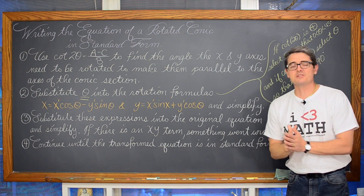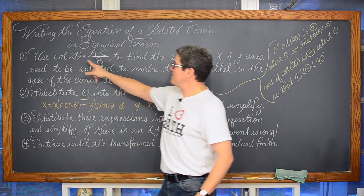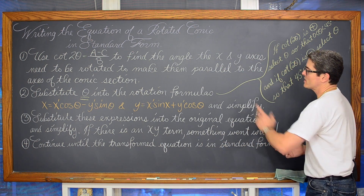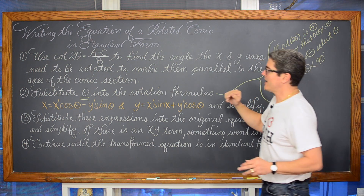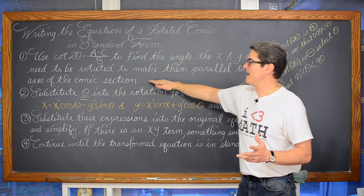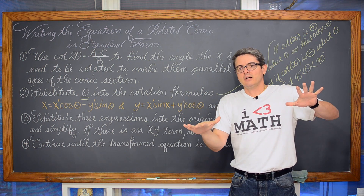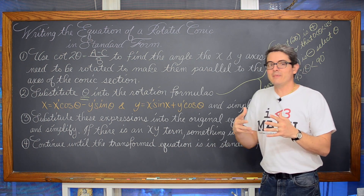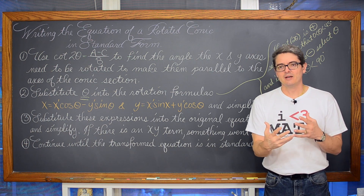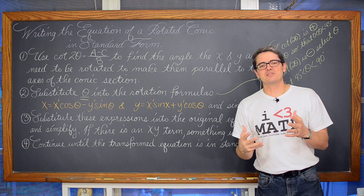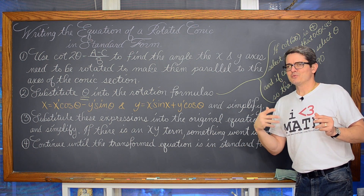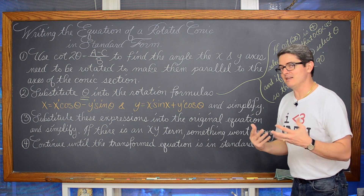Writing the Equation of a Rotated Conic in Standard Form. Step 1: Use the equation cotangent of 2θ equals a minus c over b — those coefficients of the first three terms in general form — to find the angle the x and y axes need to be rotated to make them parallel to the axis of the conic section. We are rotating a transformed x and y axis to simplify the equation of the conic into more recognizable standard forms and allow us to graph it more easily.